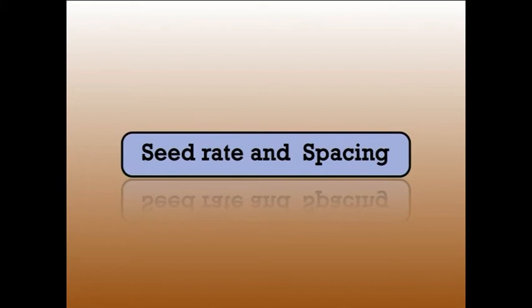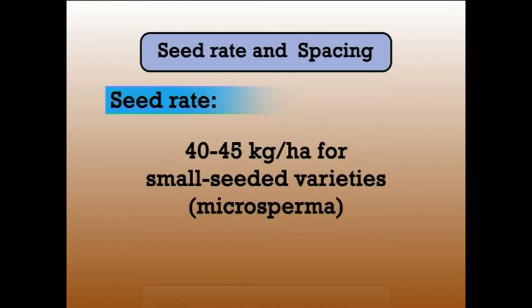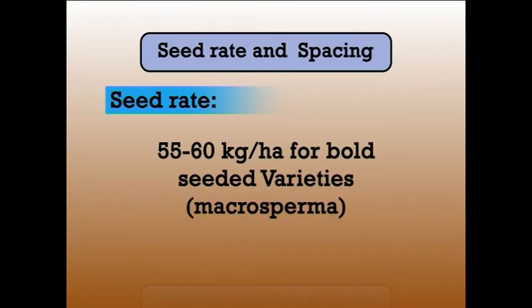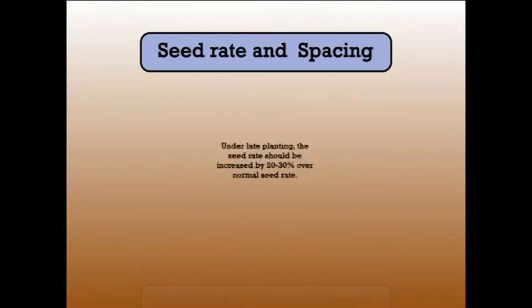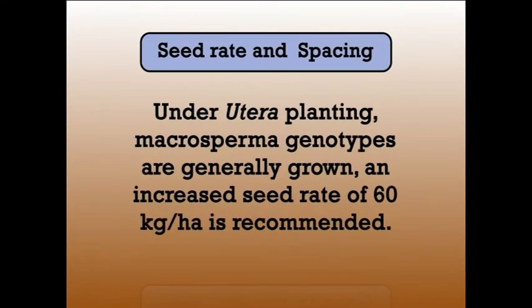The seed rate is 40 to 45 kg per hectare for small seeded varieties, that is microsperma, and 55 to 60 kg per hectare for large seeded varieties, that is macrosperma. Under late planting, the seed rate should be increased by 20 to 30% over the normal seed rate. Under utera planting, macrosperma genotypes are generally grown and an increased seed rate of 60 kg per hectare is recommended.